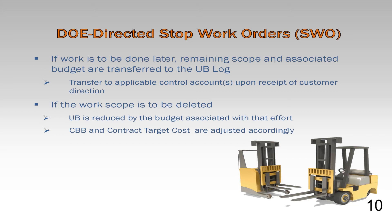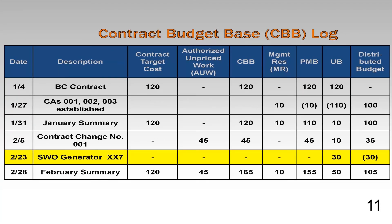If the DOE contracting officer directs work to be deleted, the contractor should delete the UB amount associated with the removed scope, update the contract target cost by the amount negotiated with DOE, and update the contract budget base and the contract target cost to reflect the amount negotiated with DOE. This amount may not be the same as the amount of the deleted work in undistributed budget if the contract target cost included any profit or fee associated with the scope removed. Again, these allocation and receipts transactions are noted in the CBB or PBB and UB logs. The CBB or PBB log clearly shows a stop work order transaction on February 23rd for $30 million. The distributed budget was debited and the UB credited accordingly. The contractor's UB log would provide more specifics.